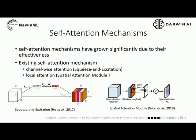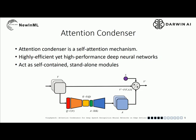Here we can see the structure of the squeeze and excitation attention module and spatial attention module, which are two well-known channel-wise attention and local attention modules. Attention condenser is a new self-attention mechanism that learns and produces a condensed embedding characterizing joint-local and cross-channel activation relationships.